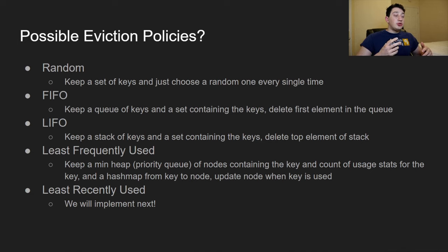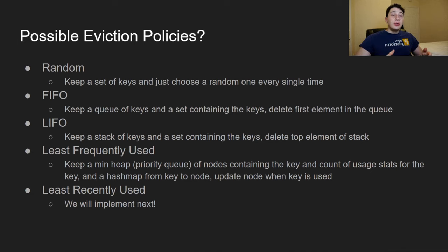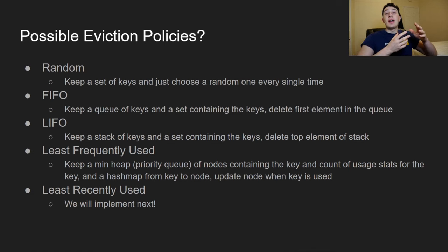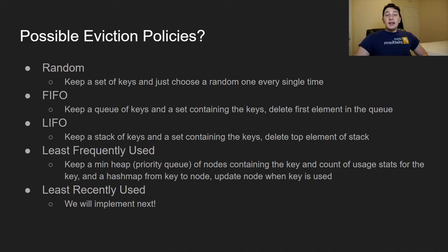Another policy is LFU — least frequently used. Every time a key is put, updated, gotten, or read, we increment that key's usage count. For example, if key 'jordan' has been used three times and key 'elon' six times, jordan would be evicted first. A useful data structure here is a priority queue (min-heap), plus a HashMap from key name to the node in the priority queue so we can quickly update and reorder elements.